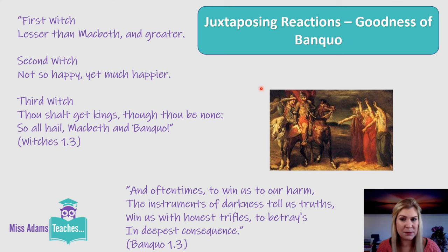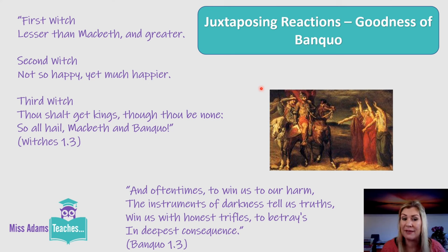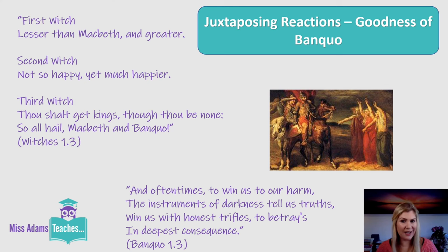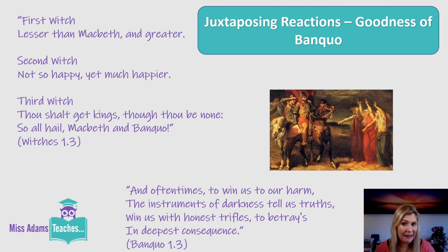When Macbeth hears the prophecies, he immediately falls into dark asides. Even Banquo notes 'our partner's rapt withal' — he's caught up in his thoughts. Whereas Banquo takes a totally different line. He warns Macbeth directly: 'Oftentimes to win us to our harm, the instruments of darkness tell us truths, win us with honest trifles to betray us in deepest consequence.' He's saying: watch it — they might be giving you little tidbits of truth so that they can then betray you once they've hooked you in. And Banquo is absolutely right — that's exactly what they do to Macbeth. Shakespeare shows Banquo as incredibly wise in juxtaposition to Macbeth, who is impulsive and greedy.